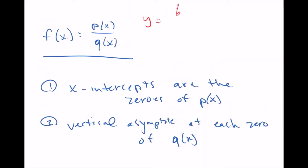For example: y equals 6 divided by x squared plus 1. As soon as you look at this, you know it's the fourth type because it has an x squared term, which none of the three previous types had. The x-intercepts are the zeros of p of x — the top is just 6, there's no x term, so we can't set 6 equal to zero and solve. There are no x-intercepts.